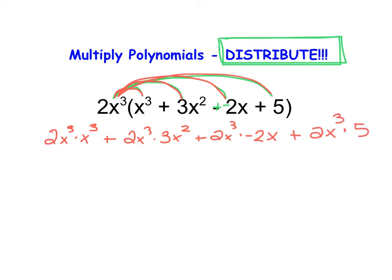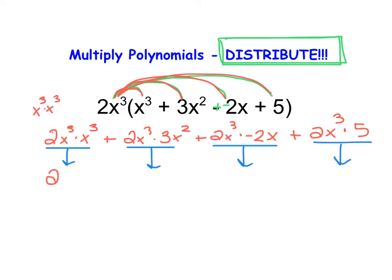Here we've written out each component, and all we're going to do is multiply each term out using what we know about multiplying terms that contain variables with exponents. We talked about these when we talked about exponent properties. In this first term, 2 is my only number, and I have x to the 3rd times x to the 3rd. Going back to exponent properties, that's really x times x times x times x times x times x — 6 x's multiplied together to give me x to the 6th. If I have two numbers with the same base being multiplied together, all I need to do is add their exponents. So I have 2 times x to the power of 6.